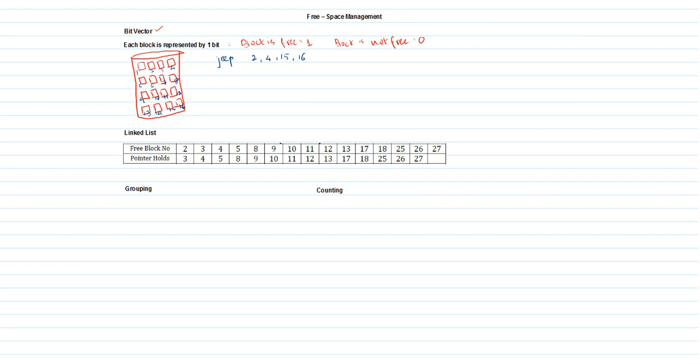By looking at the allocation blocks, you can see that the allocation is not continuous — it might be linked allocation or indexed allocation. So block numbers 2, 4, 15, and 16 are not free, and according to bit vector representation, they have to be filled with the value 0.